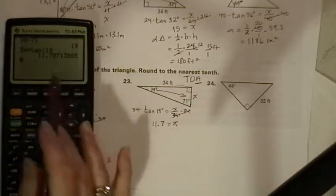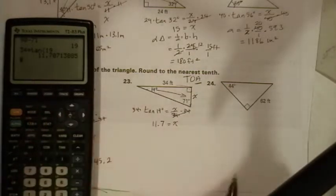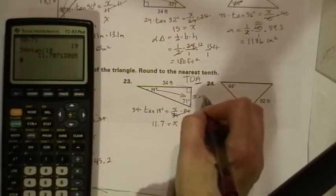11.7. Now this 7 would turn the 0 into a 1, but that won't affect our 7, so this is 11.7.